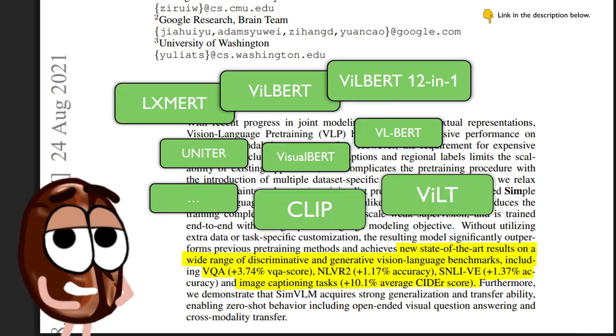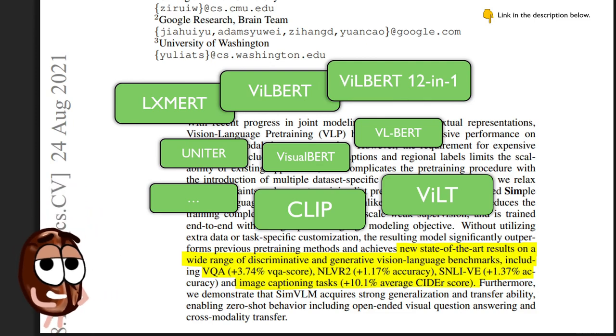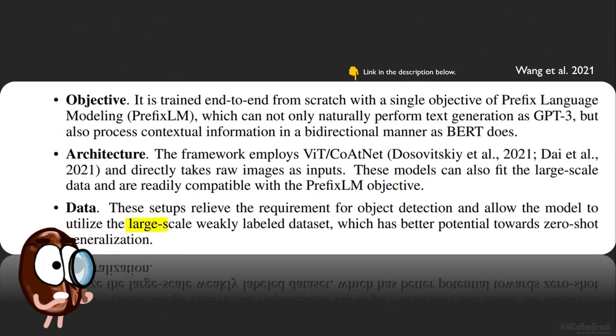What we understand from this paper so far is that all you need is a vision and language transformer that processes the image without a huge preprocessing step beforehand, and a model that is generative, at least on the text part. With this, SimVLM beats state-of-the-art on standard vision and language tasks like VQA, NLVR2, SNLI-VE, and image captioning. But Ms. Coffee Bean is stopping me — I missed something: the data. SimVLM must be pre-trained on lots of data first, specifically a large-scale weakly-labeled dataset with better potential towards zero-shot generalization.